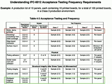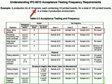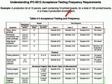What we're going to do here is show an example. Our example today is going to be a production lot of 10 panels, each panel containing 10 printed boards, for a total of 100 printed boards, and this is in a Class III production environment.